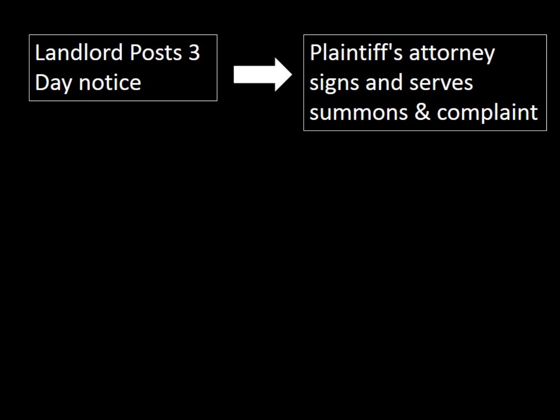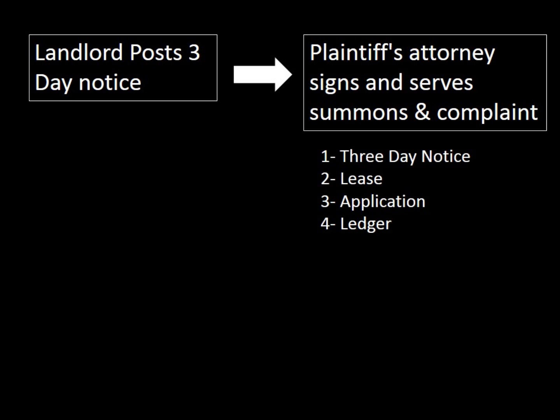We have a whole video talking about the advantages of using an attorney or not, the pros and cons. But we're going to go through this one as if you chose to use an attorney. So with an attorney, go to the top box on the flowchart. At about nine in the morning, you fax over four things: number one, the three-day notice; number two, the lease or rental agreement; number three, the application, which has the social security number, where they work, and all personal information that can be used in the collection process; and number four, a ledger showing how much they've been billed versus how much they've paid. So at nine o'clock they receive that, and by 9:30 they will have electronically filed the eviction.